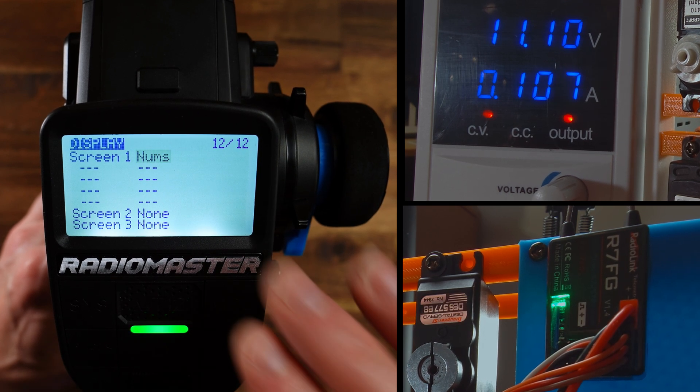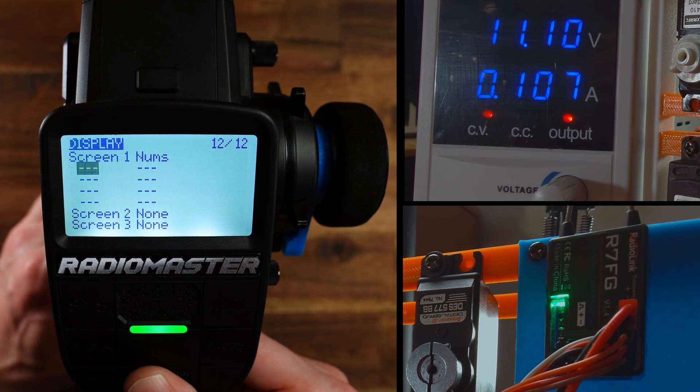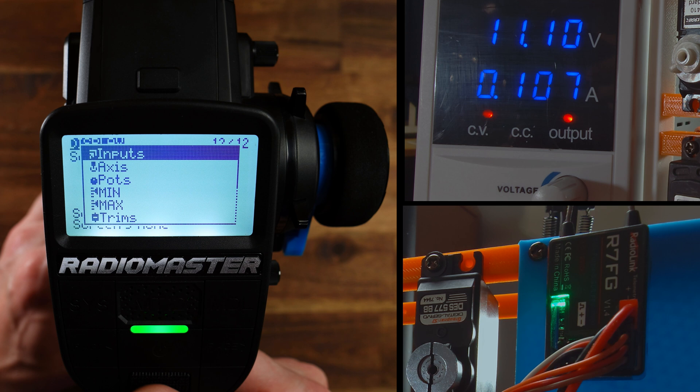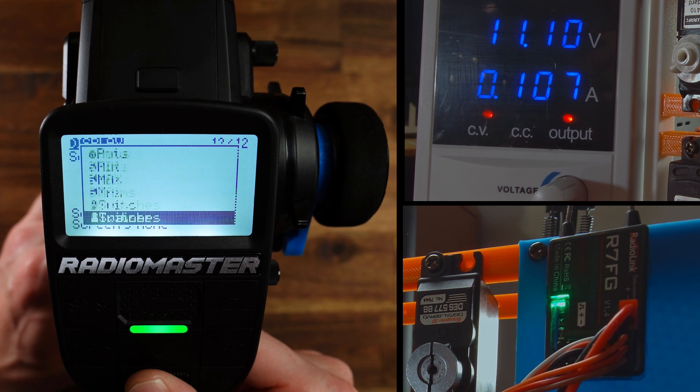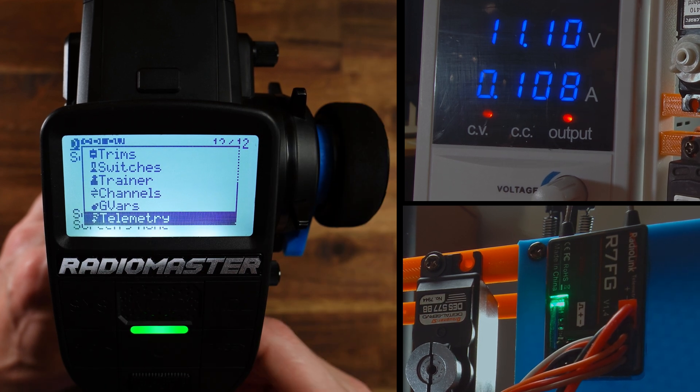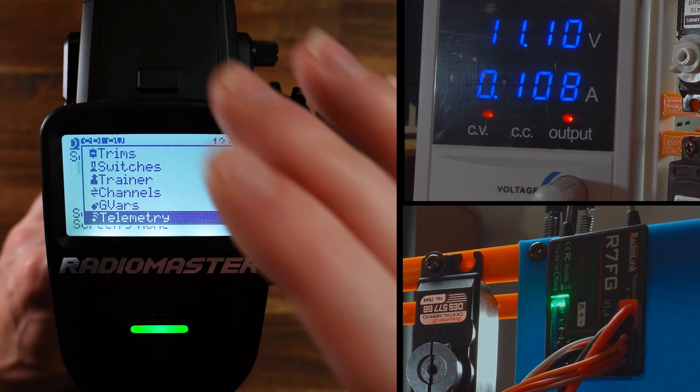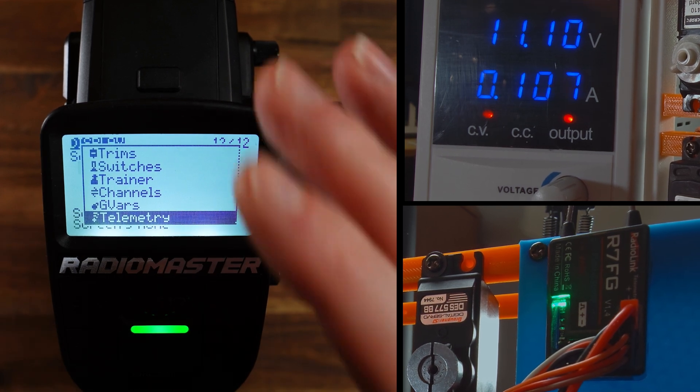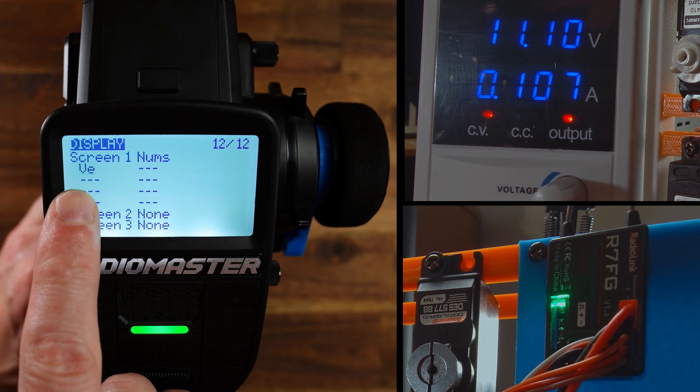For this, for the voltage output, numeric values are very well. And here, if you press and hold the roller, then you get a list of all the possible values or groups of values that you can set to be shown here in this screen. We need telemetry and VE, this is the ESC voltage.